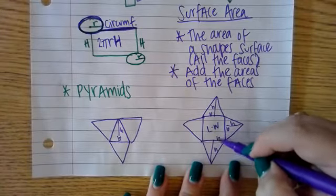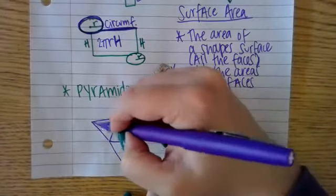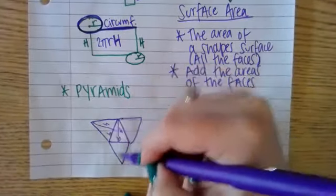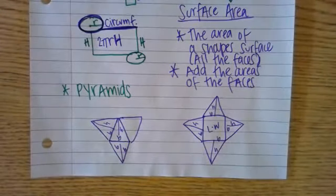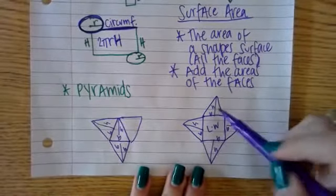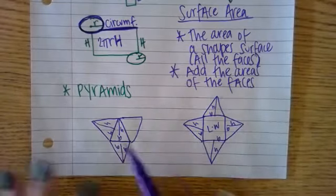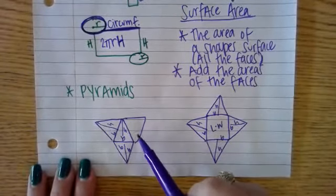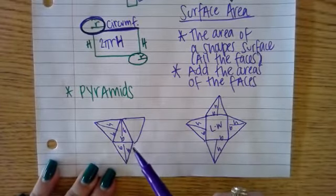And take half for each triangle. It's the same thing over here—our height, our base, and so forth. We would just find the area of each of these triangles. They should all be the same, so we can find the area of one and then multiply it by four. In this case, the lateral surface area should be the same, so you can find the area of one of these and then multiply it by three.